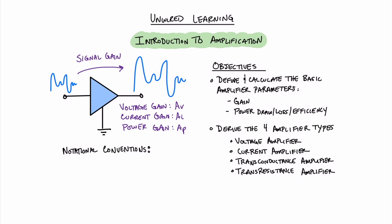Before we get into some of the specifics of electrical amplification I want to make a note about notational conventions. The signals coming into and out of the amplifier might have both a time-varying or AC component as well as some sort of DC offset value. Therefore it's important for us to know how we can distinguish based on our conventions what kind of signal we're talking about. When we talk about a mixed signal we use the convention of a lowercase letter and a capital subscript.